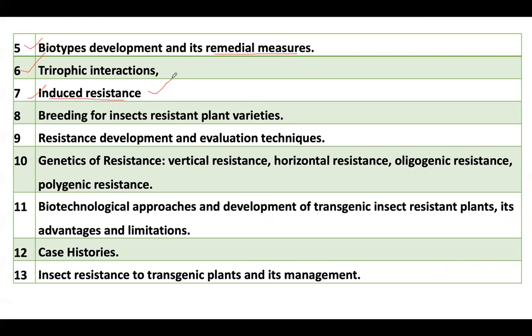Coming to the breeding of insect-resistant plants — this is a traditional breeding method in which plant breeders identify resistant traits and transfer those resistant traits to new cultivars through a breeding approach.